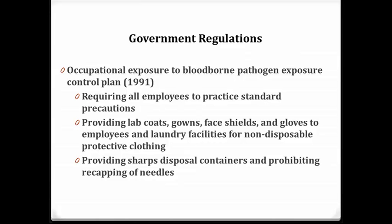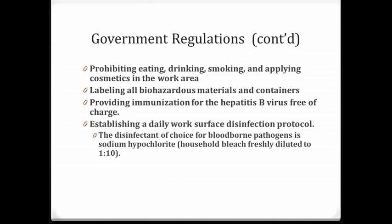There are different government regulations. The Occupational Exposure to Bloodborne Pathogen Exposure Control Plan of 1991 requires all employees to practice standard precautions, provide lab coats, gowns, face shields, and gloves to employees along with laundry facilities for non-disposable protective clothing, provide sharps disposal containers, and prohibit recapping of needles. It also prohibits eating, drinking, smoking, or applying cosmetics in work areas; requires labeling all biohazard materials and containers; provides hepatitis B immunizations free of charge; and establishes a daily work surface infection protocol.